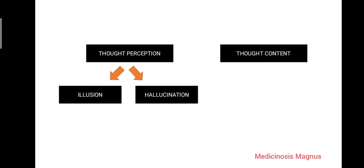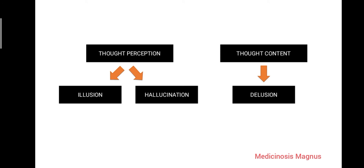The other group is thought content — what content is mistaken. This group has a disorder called delusion. Delusion is basically a disorder of thought content, where the content itself is something wrong.